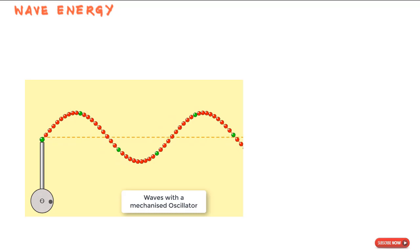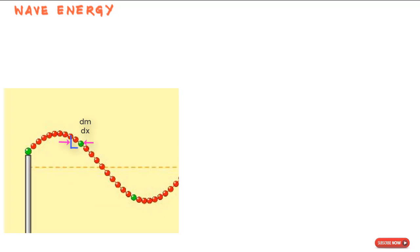Let's get mathematical and find the rate of energy transmission. For a small mass of length dx and mass dm on the string, the kinetic energy is: dK = ½ dm · u², where u is not the wave velocity v but the transverse velocity of the string element in the yy direction.